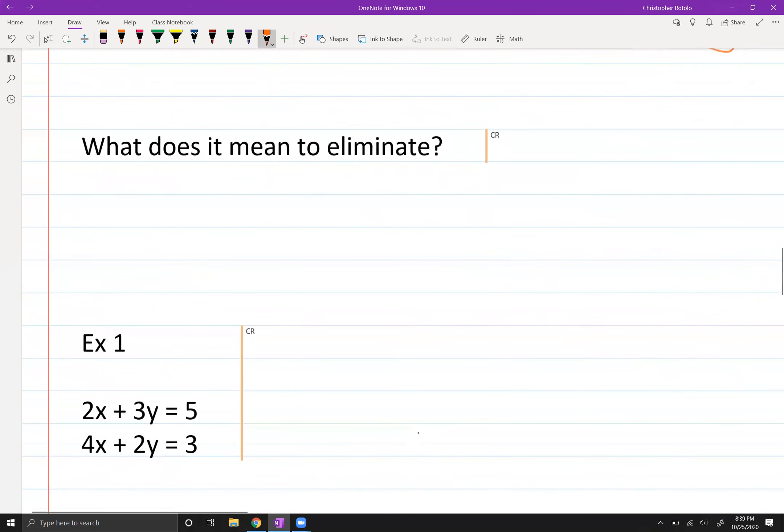Again, probably could have done the whole thing the other way around. But I just think it's easier to work with 2 than it is 1 half. Now what's it mean to eliminate? What do students tell me all the time? That means to get rid of something. So that's exactly what we mean. We want to remove something. We're going to remove or get rid of, in this case, x or y.